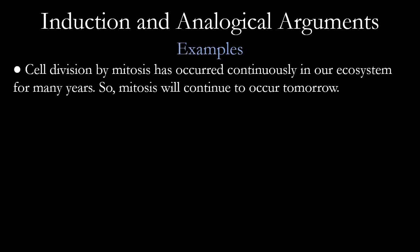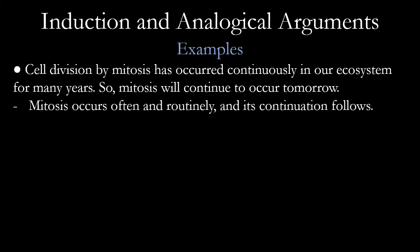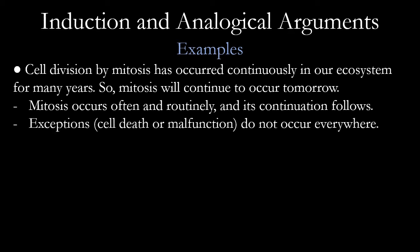Here is an example of a fairly strong argument: cell division by mitosis has occurred continuously in our ecosystem for many years, so mitosis will continue to occur tomorrow. This argument is based on lots of evidence. Mitosis occurs often and routinely, and its continuation follows naturally. Exceptions — such as cell death or malfunctioning cells — don't occur everywhere; we're not expecting everything to suddenly stop dividing by mitosis overnight. So it's a strong argument.